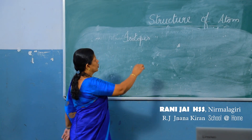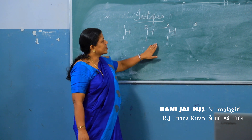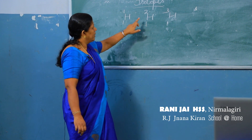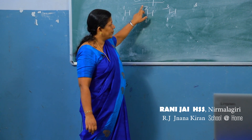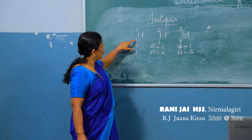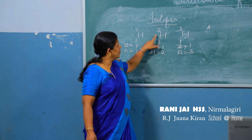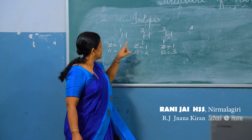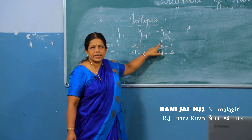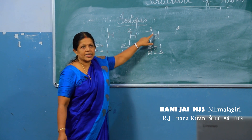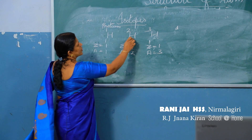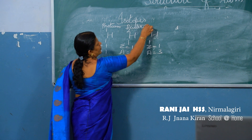Now let us study about isotopes. Let me represent the isotopes of hydrogen. Hydrogen with atomic number 1, mass number 1. Next, hydrogen with atomic number 1, mass number 2. The isotopes of hydrogen are represented as H-1-1, H-1-2, H-1-3. The three hydrogen atoms are the same — they have the same atomic numbers.